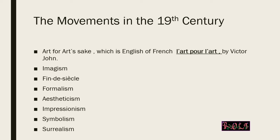The third movement is Fin de Siècle, which means the end of century, and it represents a departure from the old and a move towards new forms. Then we have the Formalism movement, which stresses the importance of form and technique rather than content. Then we have Aestheticism, which supports aesthetic values over social and political themes, reinforcing that modern literature is about art rather than religious or political value.